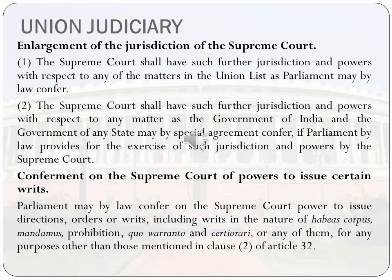Conferment on the Supreme Court of powers to issue certain writs: Parliament can confer on the Supreme Court special powers to issue directions, orders or writs, including writs in the nature of habeas corpus, mandamus, prohibition, quo warranto and certiorari, for any purposes other than those mentioned in Clause 2 of Article 32. So Parliament can confer the Supreme Court with extra powers.